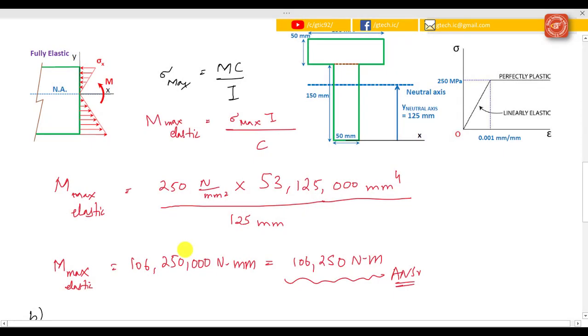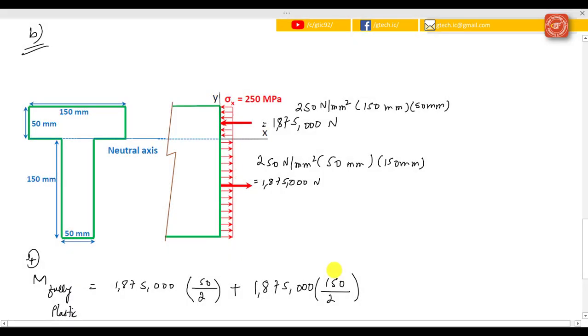For finding the moment for the fully elastic condition, we know that σ_max = Mc/I. So finding the moment, M_max for elastic would become σ_max × I divided by c. Substituting these terms, the maximum moment for the elastic region is 161,250 newton meter.